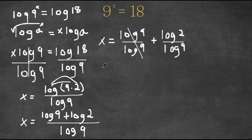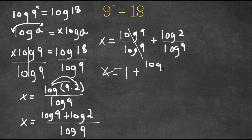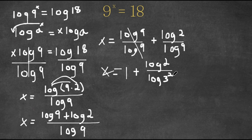Now these two cancel out, so we get x is equal to 1 plus log 2 over log 9. And I'm actually going to replace the 9 with 3 squared. Now remember, we're going to use the same power property that we used earlier, and I'm going to move the 2 to the front.